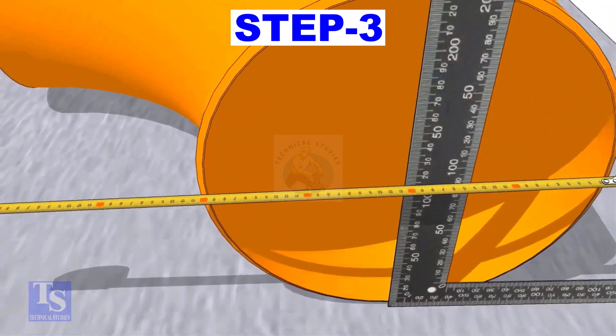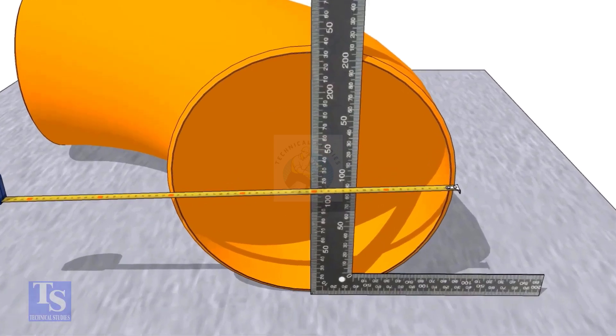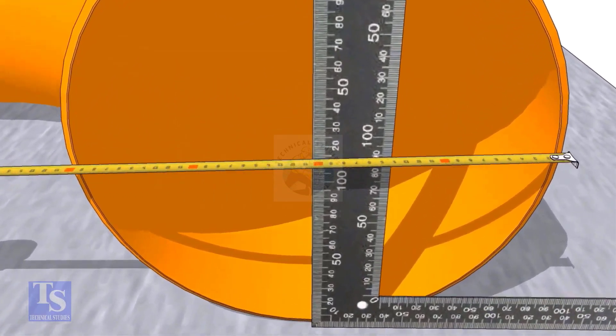Put a right angle at the center of the elbow. Make sure the distance from the edge of the elbow to the face of the right angle is equal.